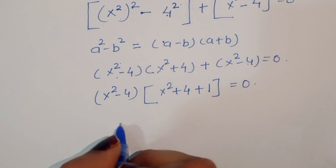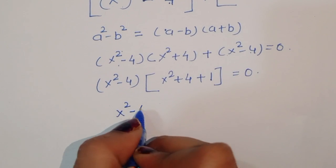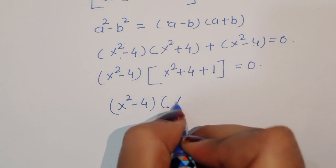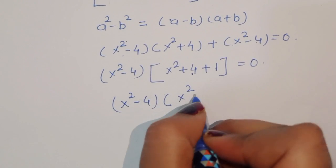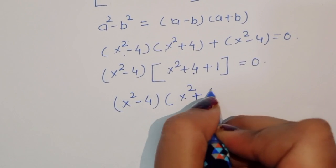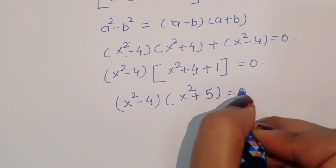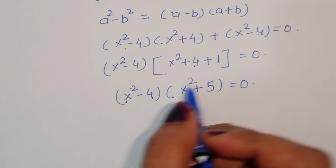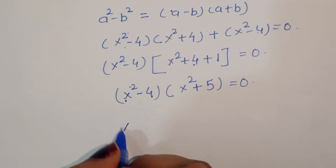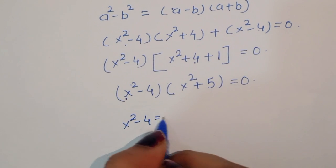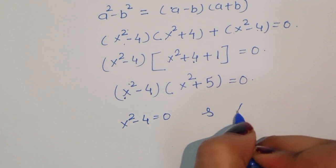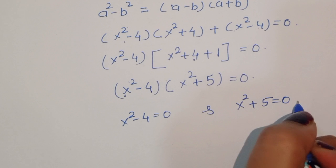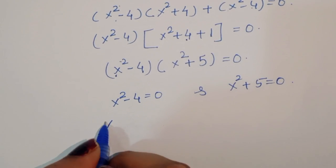So we get (x² - 4)(x² + 5) = 0, giving us two equations: x² - 4 = 0 and x² + 5 = 0.